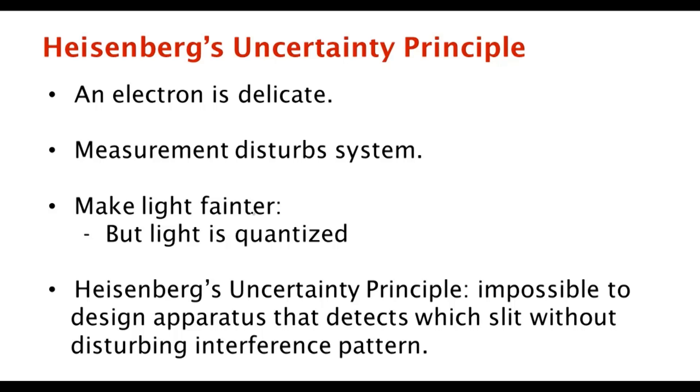This is something that's expressed in Heisenberg's uncertainty principle. This principle says it's impossible—in the double-slit experiment—it's a more general principle, but if you see what it says for the double-slit experiment, it basically says that it's impossible to design an apparatus...